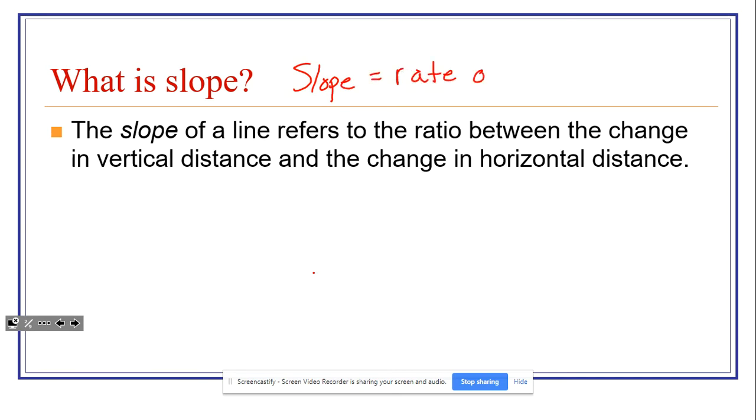The formal definition of slope: The slope of a line refers to the ratio between the change in vertical distance, and vertical distance would be on the y-axis, and the change in horizontal distance, and of course, the horizontal distance would be on the x-axis.